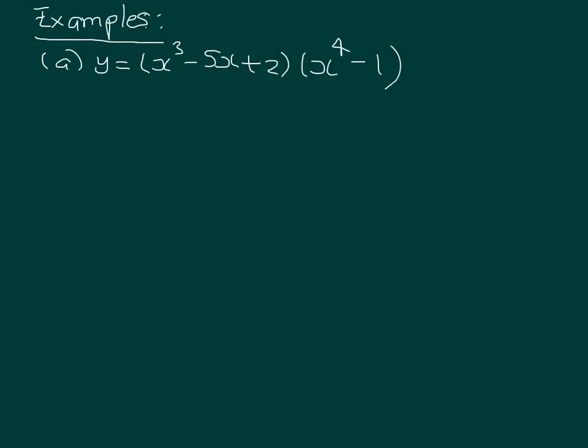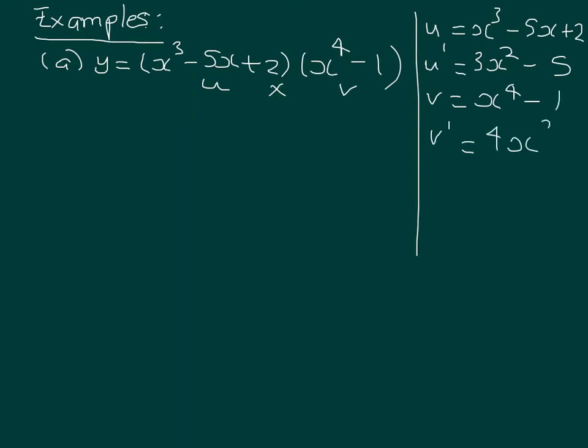Let's say we have an example like this. We'll label the first bracket u and the second bracket v. We're using the product rule because they're multiplied. I think it's helpful to write out the four things we need on the side: u = x³ - 5x + 2, u' = 3x² - 5, v = x⁴ - 1, and v' = 4x³.